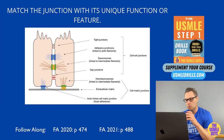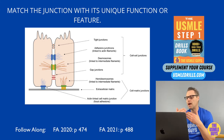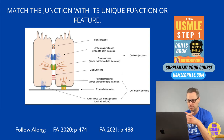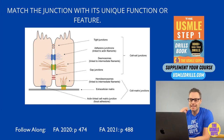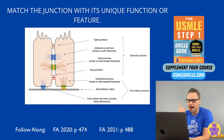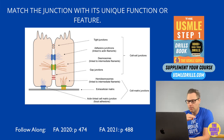Gap junctions have conexons, which are channel proteins that allow for chemical and electrical communication between cells. Hemidesmosomes are needed to connect keratin found in the basal cells to the underlying basement membrane. Integrins are membrane proteins that help maintain the integrity of the basal lateral membrane by binding to laminin, collagen, and fibronectin, all found in the basement membrane.